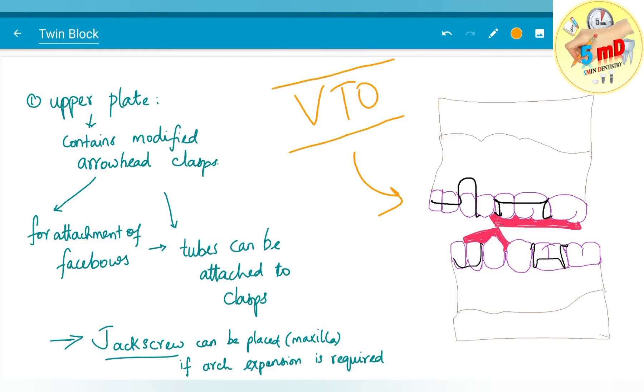Now let us see the components. The upper plate contains modified arrowhead clasps for attachment of face bows and tubes can also be attached to these clasps. Jack screw can be placed in the maxilla if arch expansion is required.